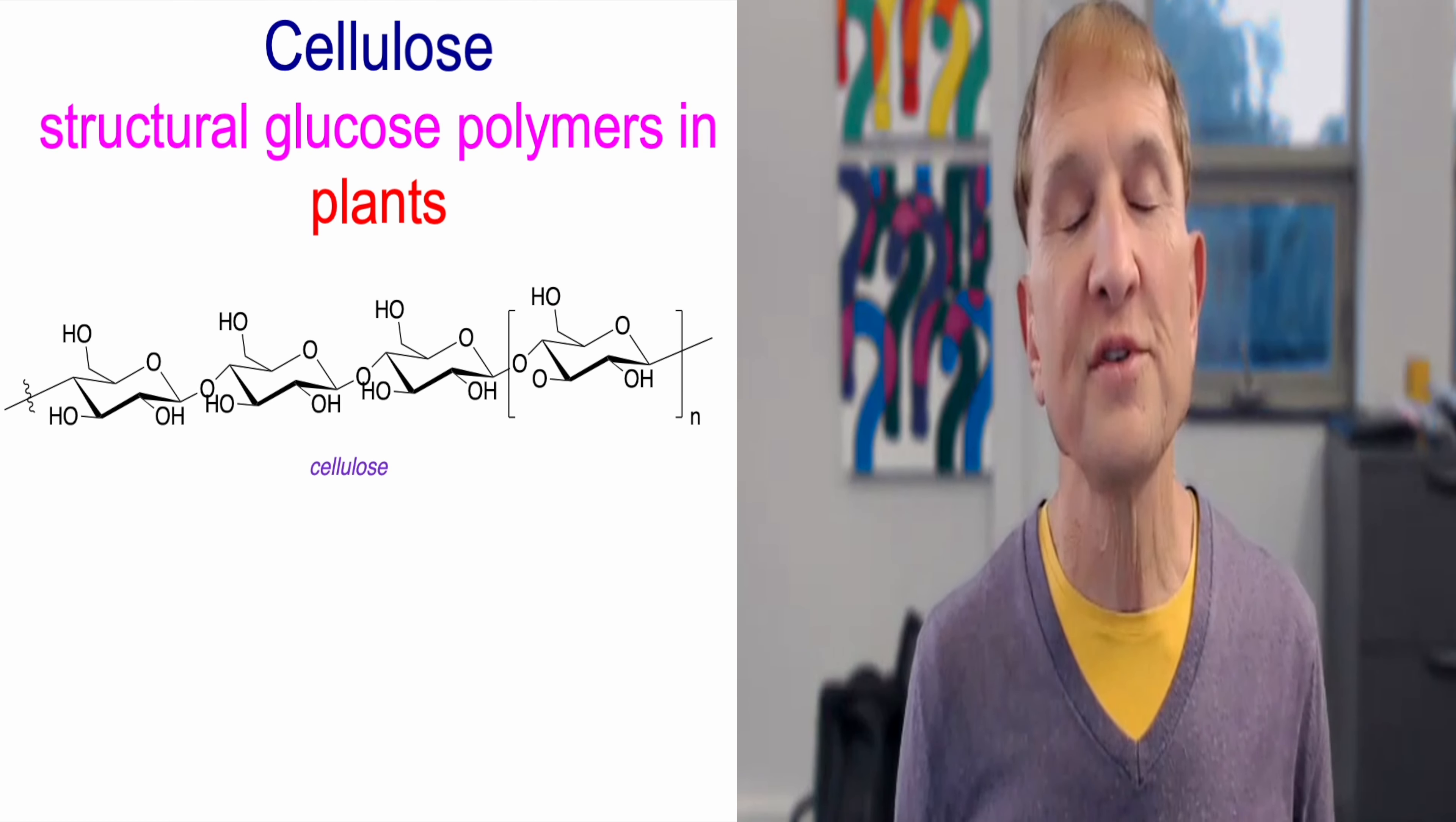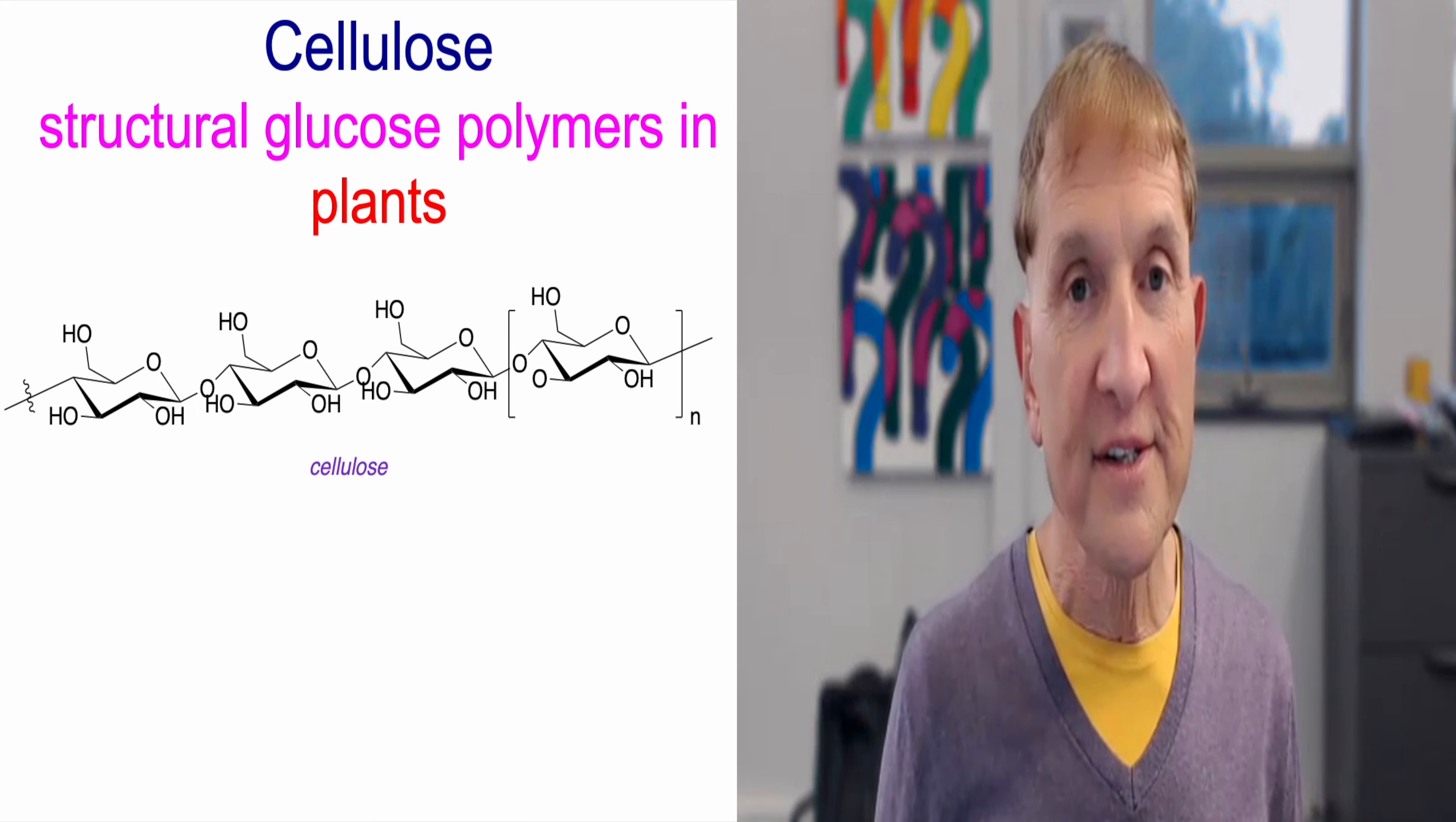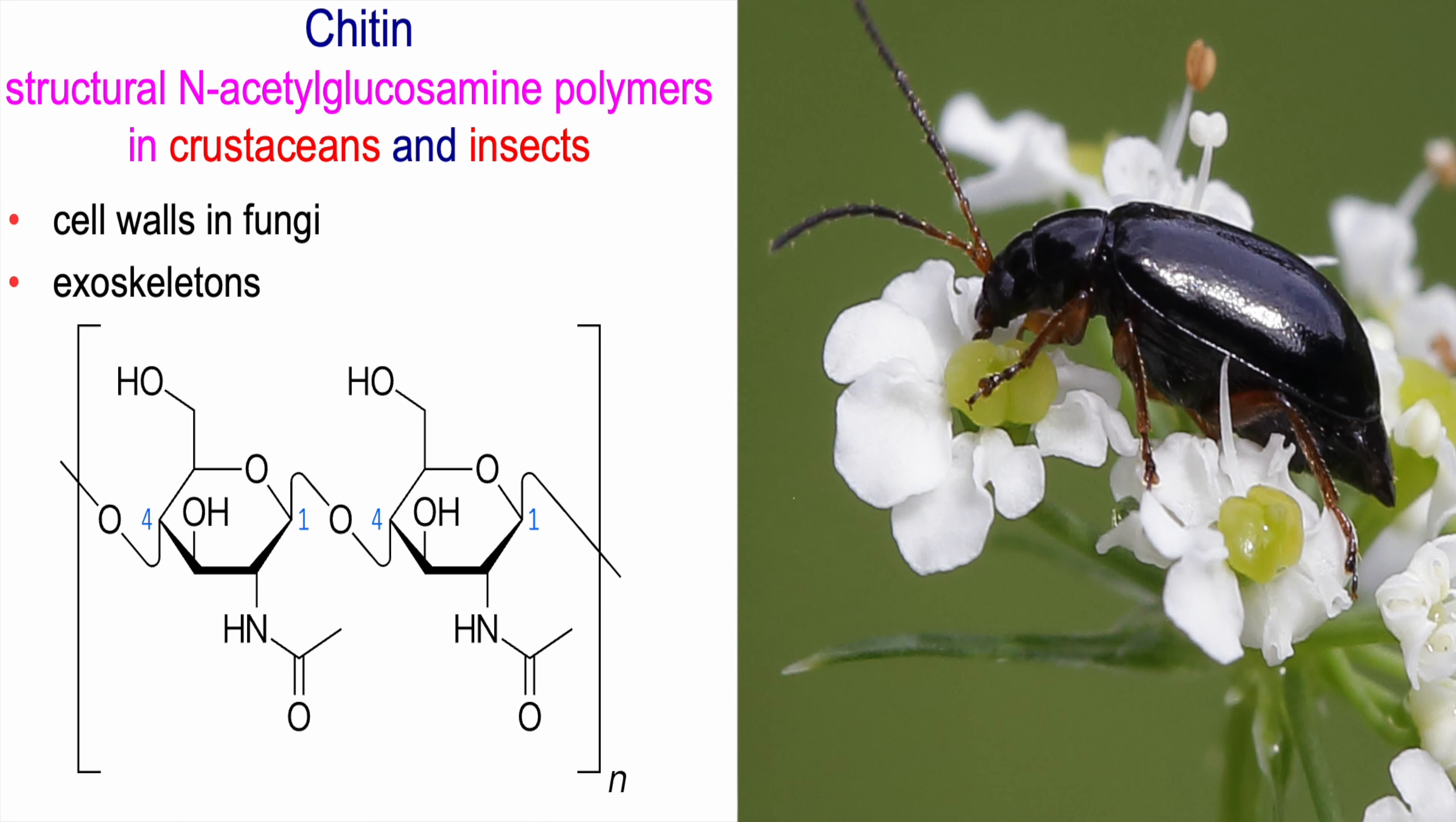Just as cellulose is used for structural features in plants, chitin is a similar polysaccharide used for insect exoskeletons. Chitin is a polymer of N-acetylglucosamine.